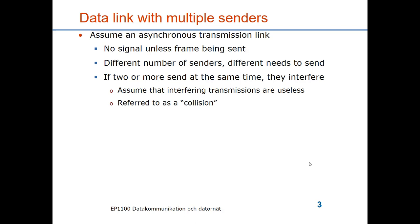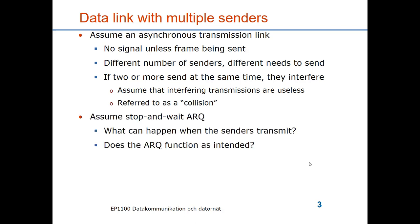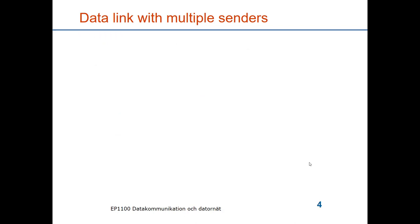Since it is one link, if two or more senders transmit at the same time they would interfere. We assume here that the interfering transmissions are useless — we refer to this as a collision. Furthermore, assume that we use a regular stop-and-wait ARQ. So what can happen when the senders transmit? Does the ARQ function as intended? Let's look into that.